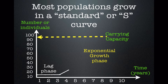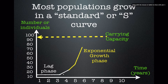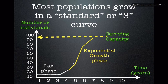Then the population enters a phase where it starts to increase exponentially, which means over a certain period of time the population is doubling. Times are good now — lots and lots of babies or individuals are being produced, and most of them are surviving to reproduce themselves. So the population is really starting to climb uphill quickly.